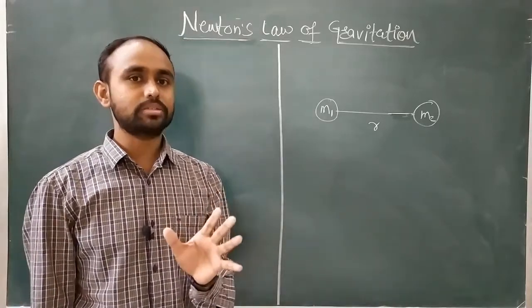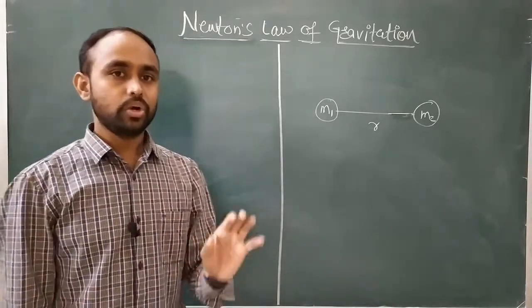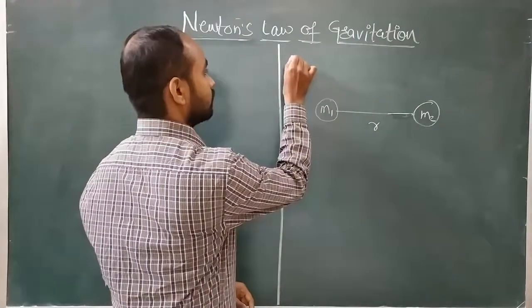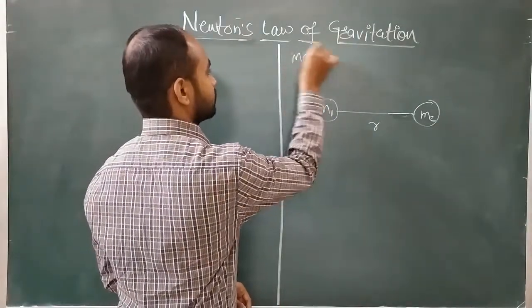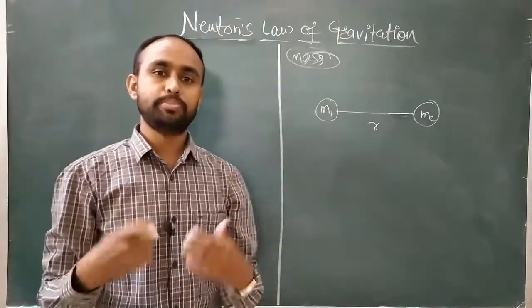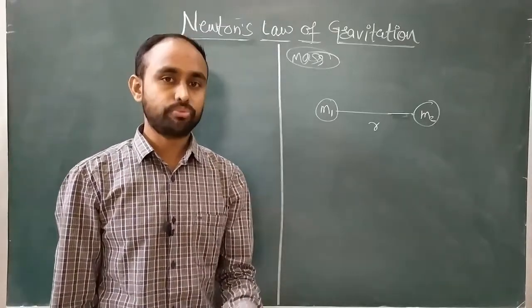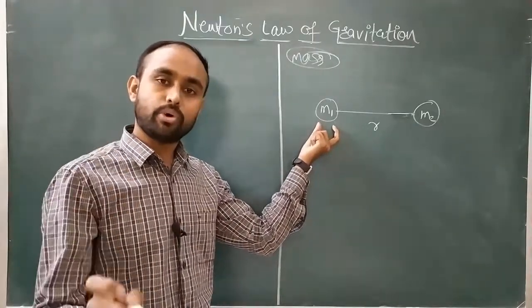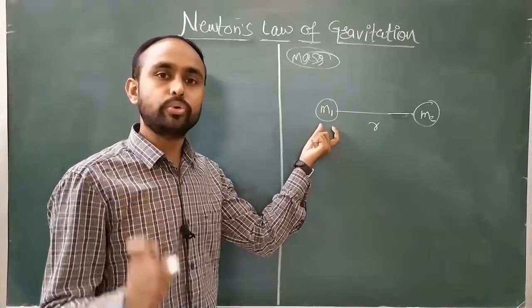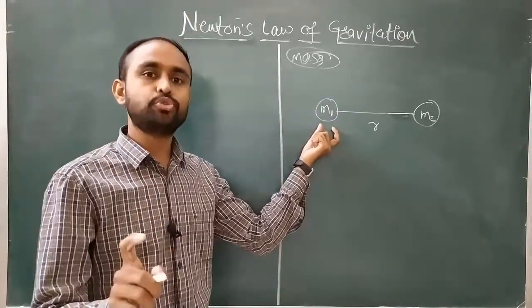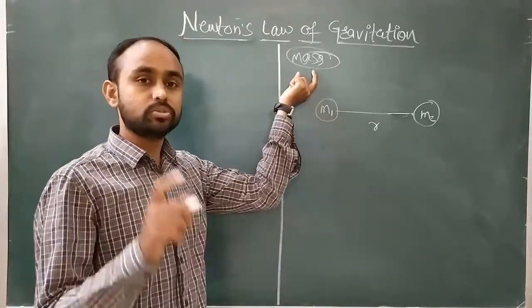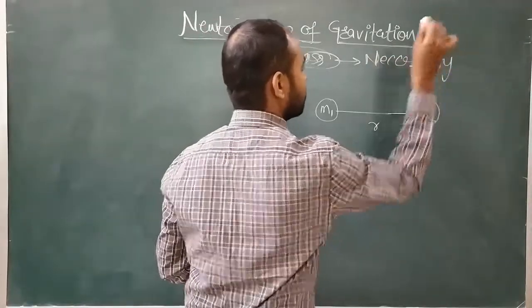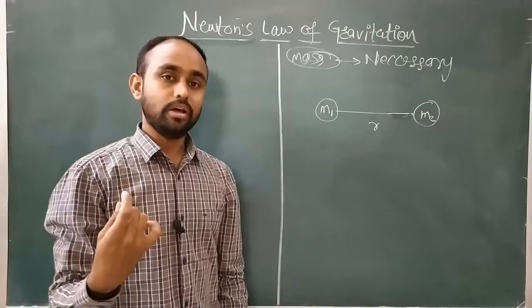One thing that is compulsory or necessary to have gravitational attraction is mass - that body must possess mass. If you have mass, then you can experience the gravitational force or gravitational attraction. Even if you are at rest, but if you have mass, then you can experience the gravitational force. Not necessarily should you always be in motion, but the necessary thing is mass - mass is necessary if you want to experience or study the gravitational force.